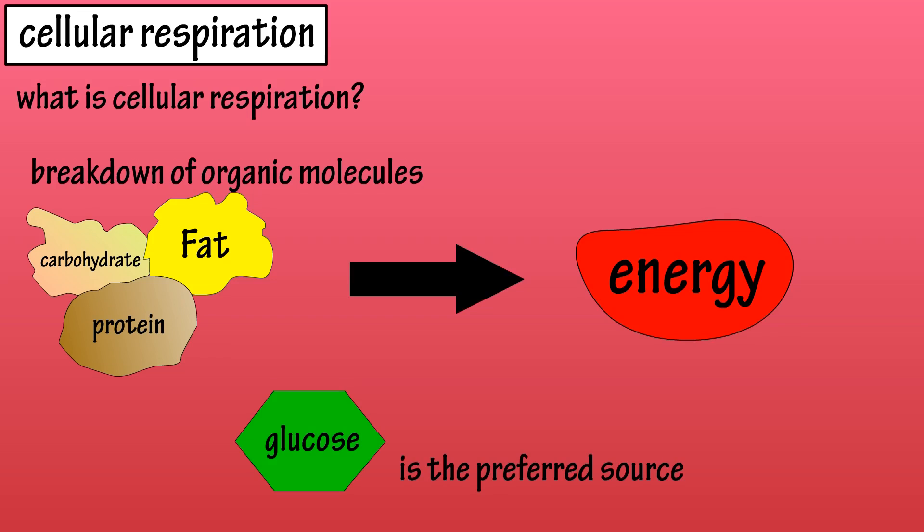Glucose, which is a simple carbohydrate, is the preferred source for the cellular respiration pathway.